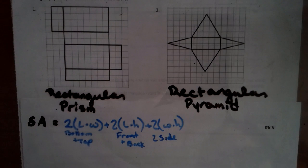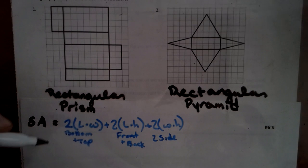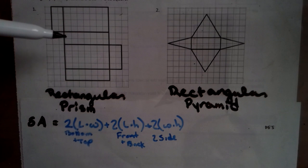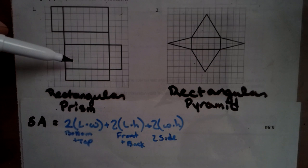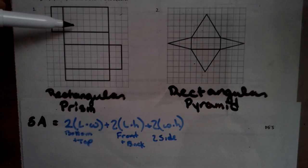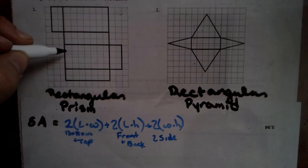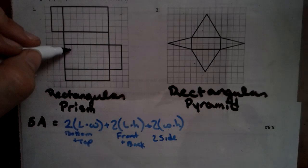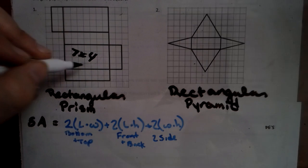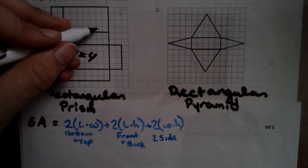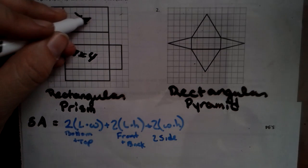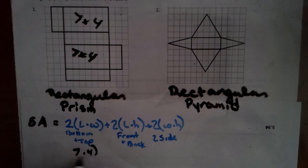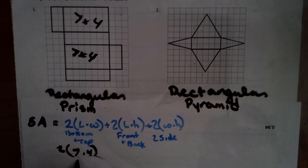So we have the bottom and the top. We can call this the bottom, the front and back, the top. We go 7 by 4 — so this is the 7 by 4. So we can go 7 times 4 doubled. 7 times 4 is 28, 28 doubled — we'll just do that in our heads — 56.